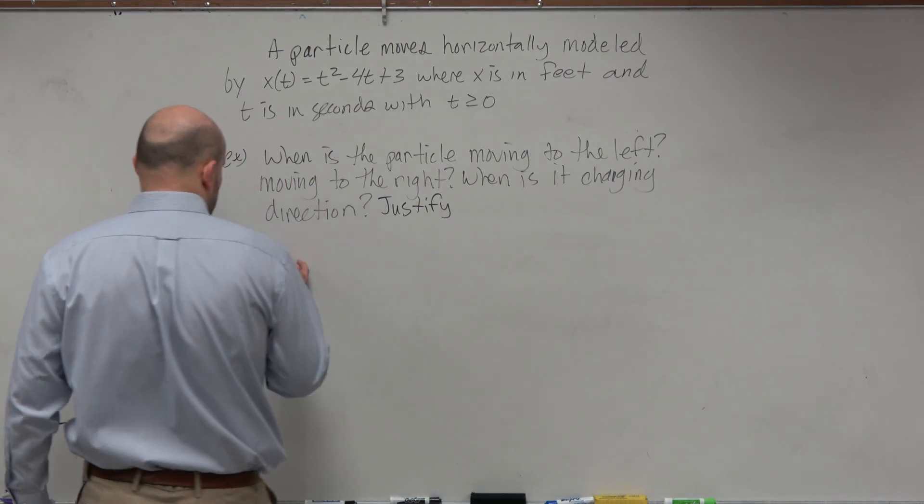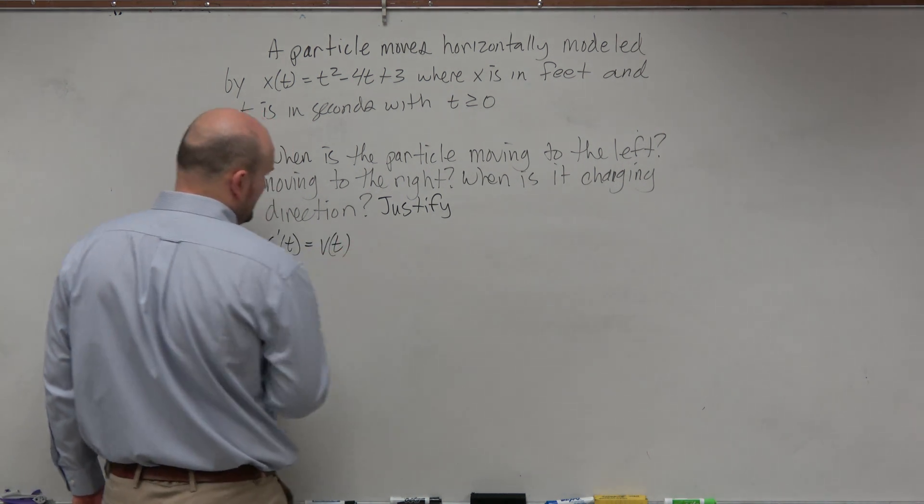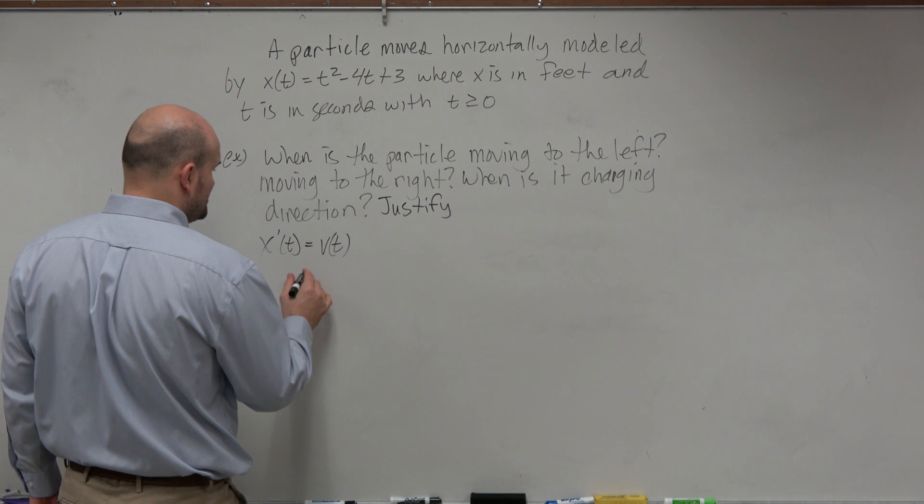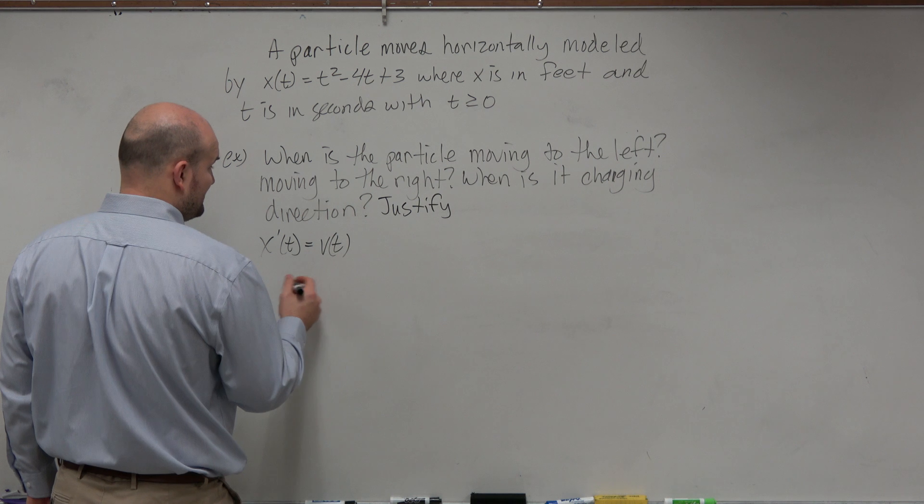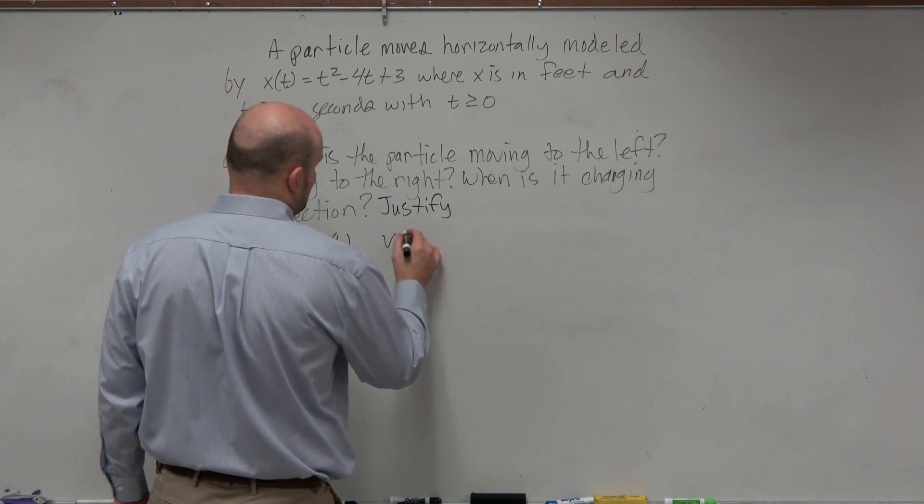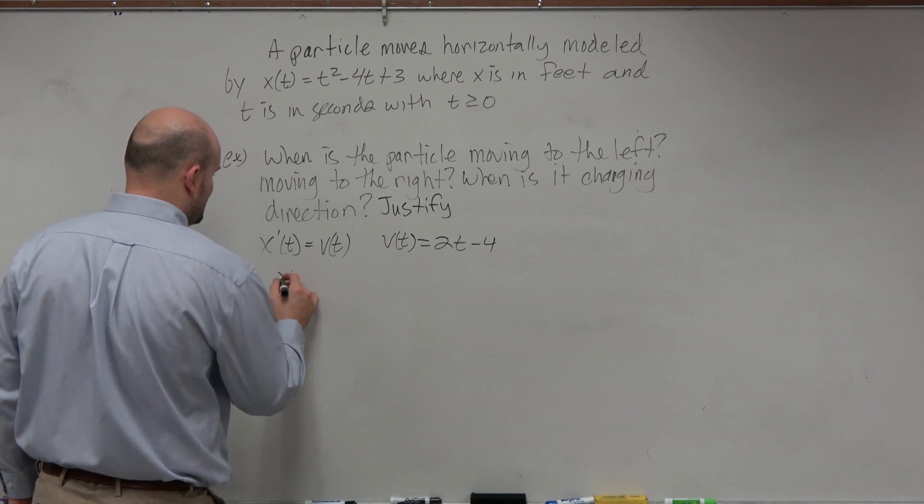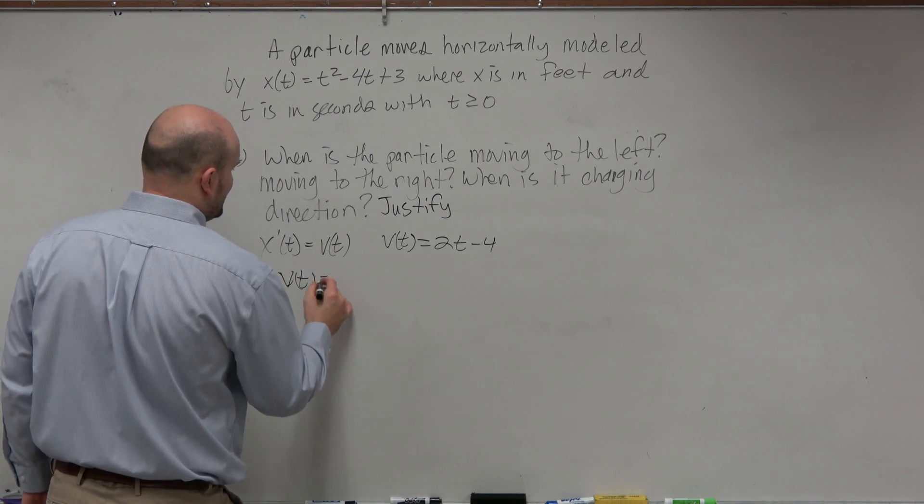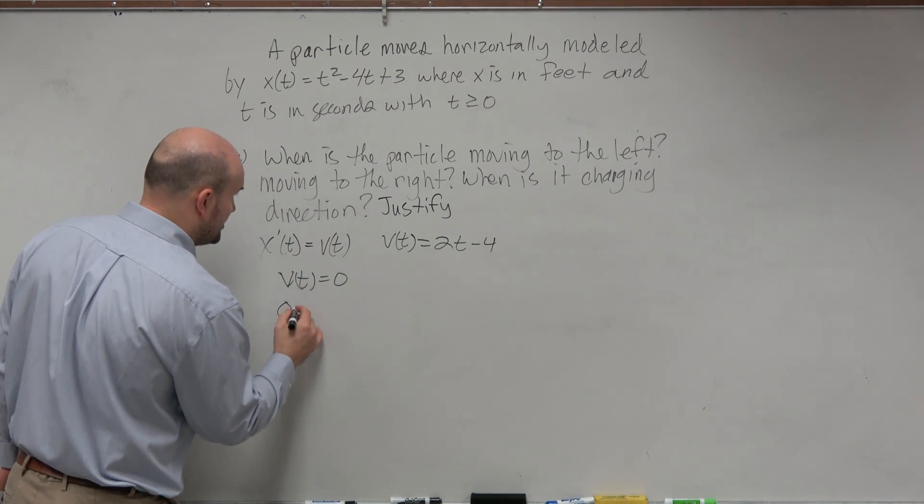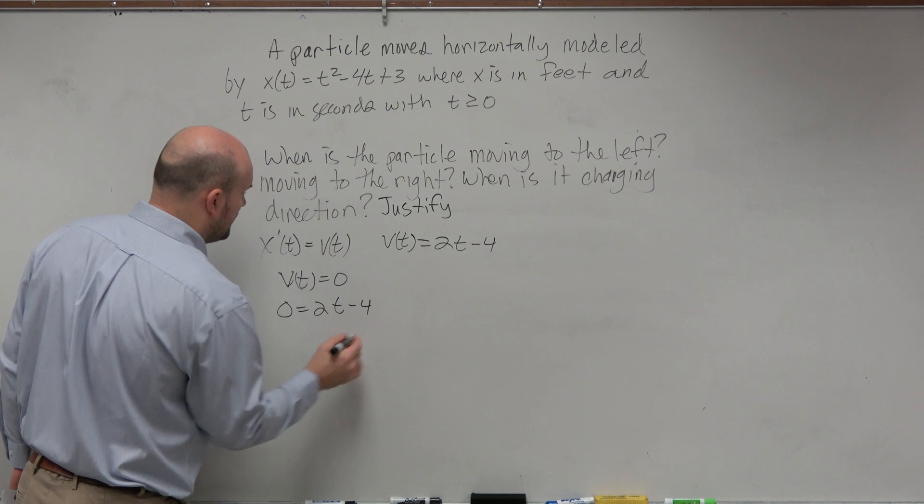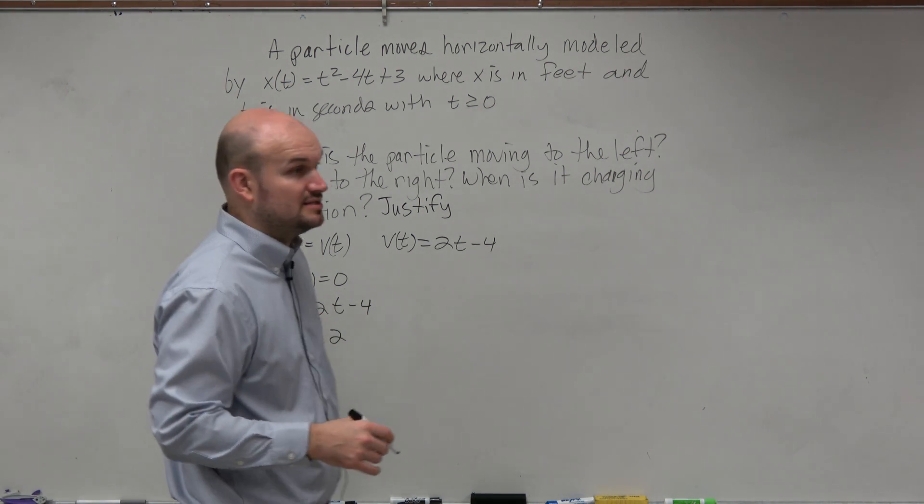So first thing is let's define velocity. So x prime of t is equal to v sub t. So we know that it is changing direction when v sub t is equal to 0. So let's figure out what v sub t is. So v sub t is equal to 2t minus 4. So when v sub t is equal to 0, we know that it is going to be changing direction. So we just say 0 equals 2t minus 4. Add 4, divide by 2, t is equal to 2. So we have 2 seconds, that's where it's changing.